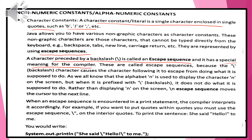Let us discuss the non-numeric constant or alphanumeric constant. We must know what is a non-numeric or alphanumeric value. The data which bears a character, string, or some special symbol — they are called non-numeric data or alphanumeric data. So, it does not contain numbers.